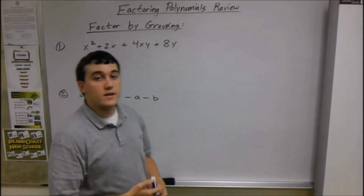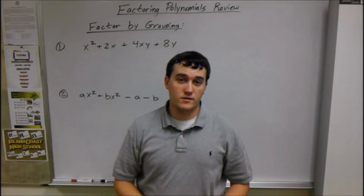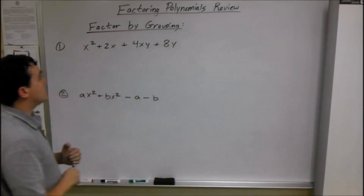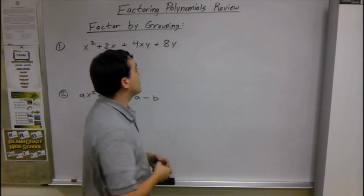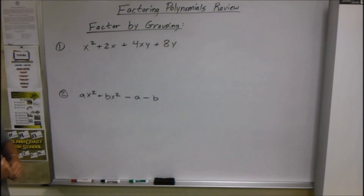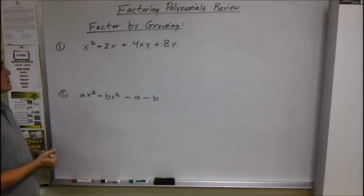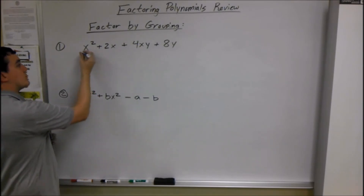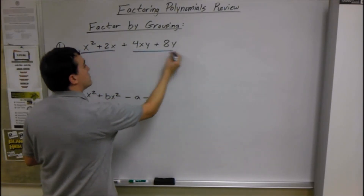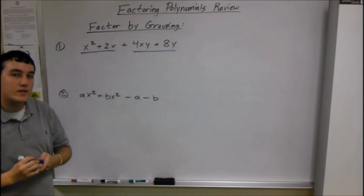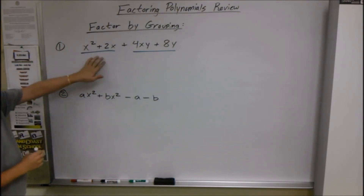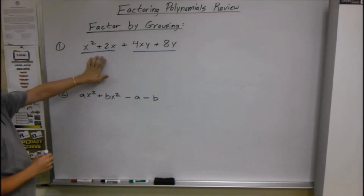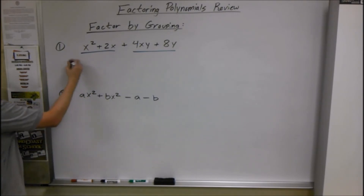Alright, next I'll be talking about factoring by grouping, and this is going to be important later for when we're doing the AC method, which is another type of factoring. When you're factoring by grouping, the first thing you want to do is group the first two and group the last two, and then take a greatest common factor out of each group. Our first two — what do they have in common? An x, so we take out an x.